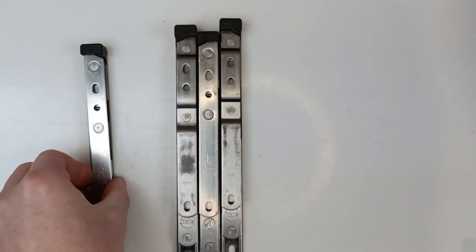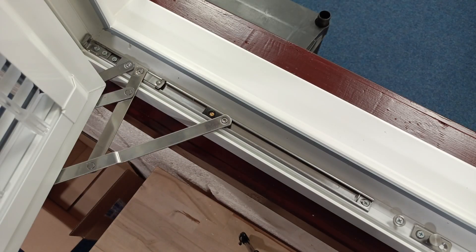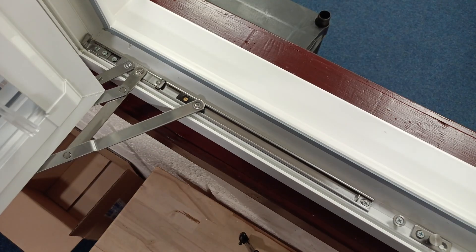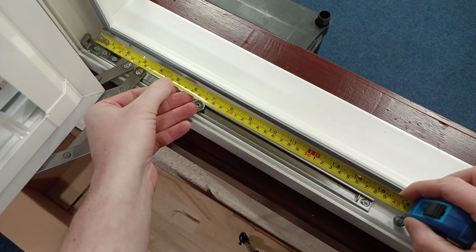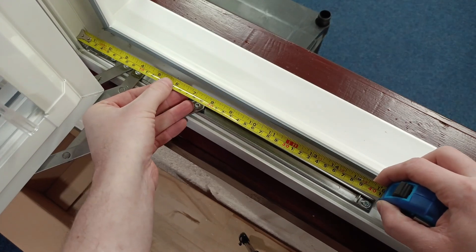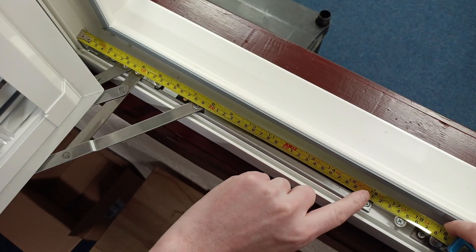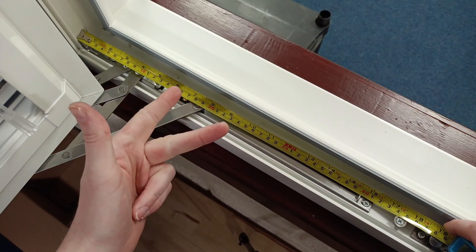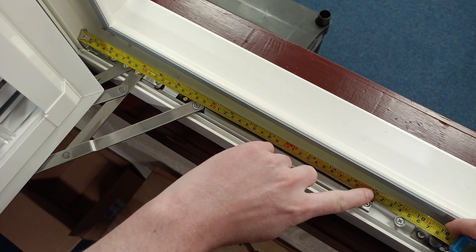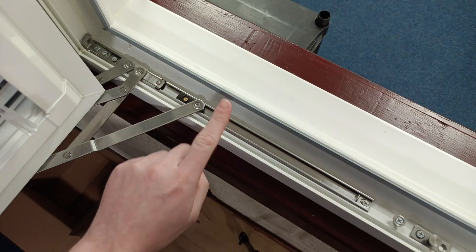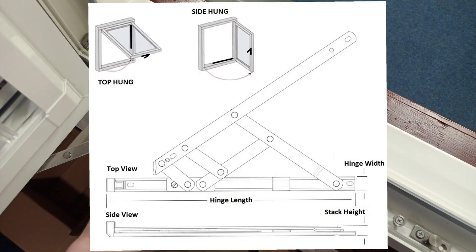I'll jump over to a window and show you how to take the sizes. So this is a window here — just put your tape measure right to the end of the hinge, right up against the frame, and measure right over to the end of the hinge. Take the closest size to 8, 10, 12, 16, 20, or 24 inches — so this is 410mm, which is 16 inch. The hinge is sitting at the bottom with the handle on the side and the window opens sideways, so this is classed as a side opener.